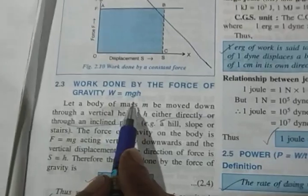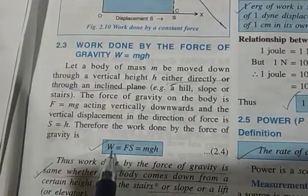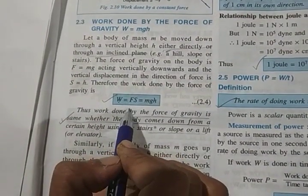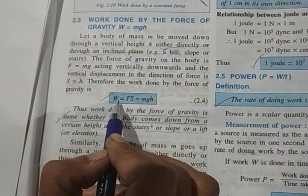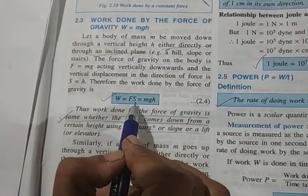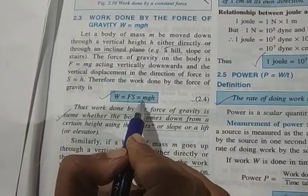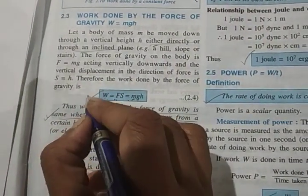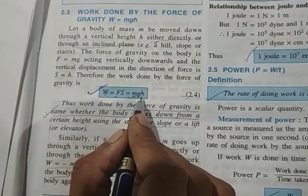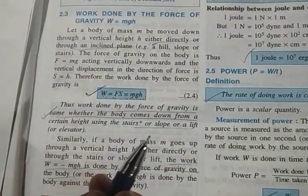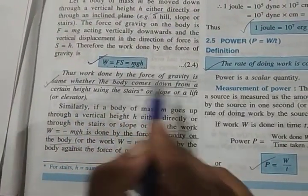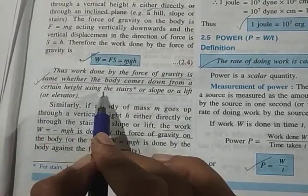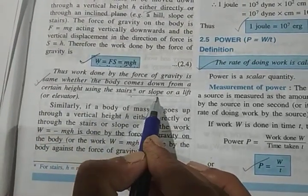The next topic is work done by the force of gravity. The force of gravity is always in the downward direction. Work done is F into S, and since F equals M into G, the work done by the force of gravity is M into G into H. Importantly, work done by the force of gravity is the same whether the body comes down from a certain height using stairs, a slope, or a lift.